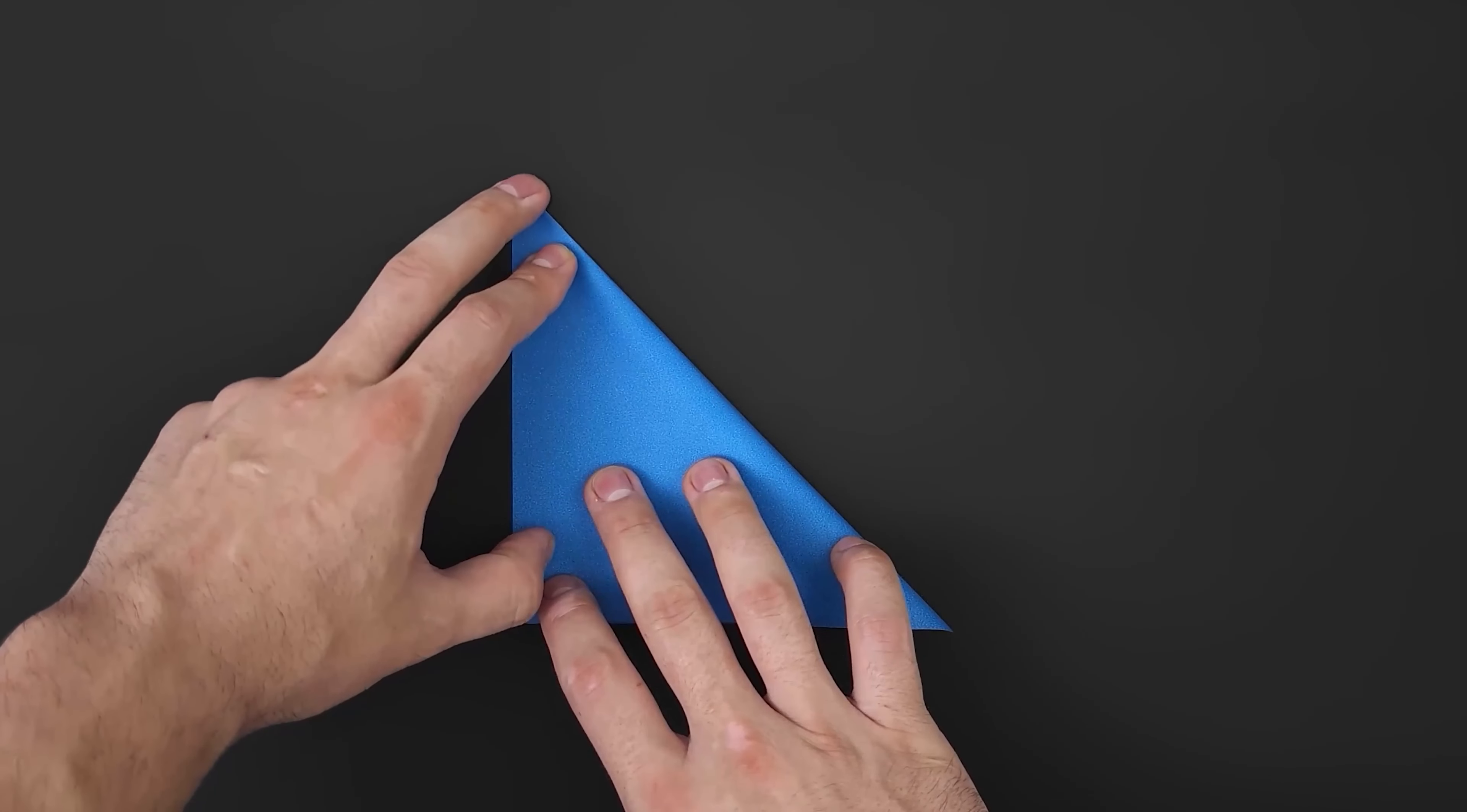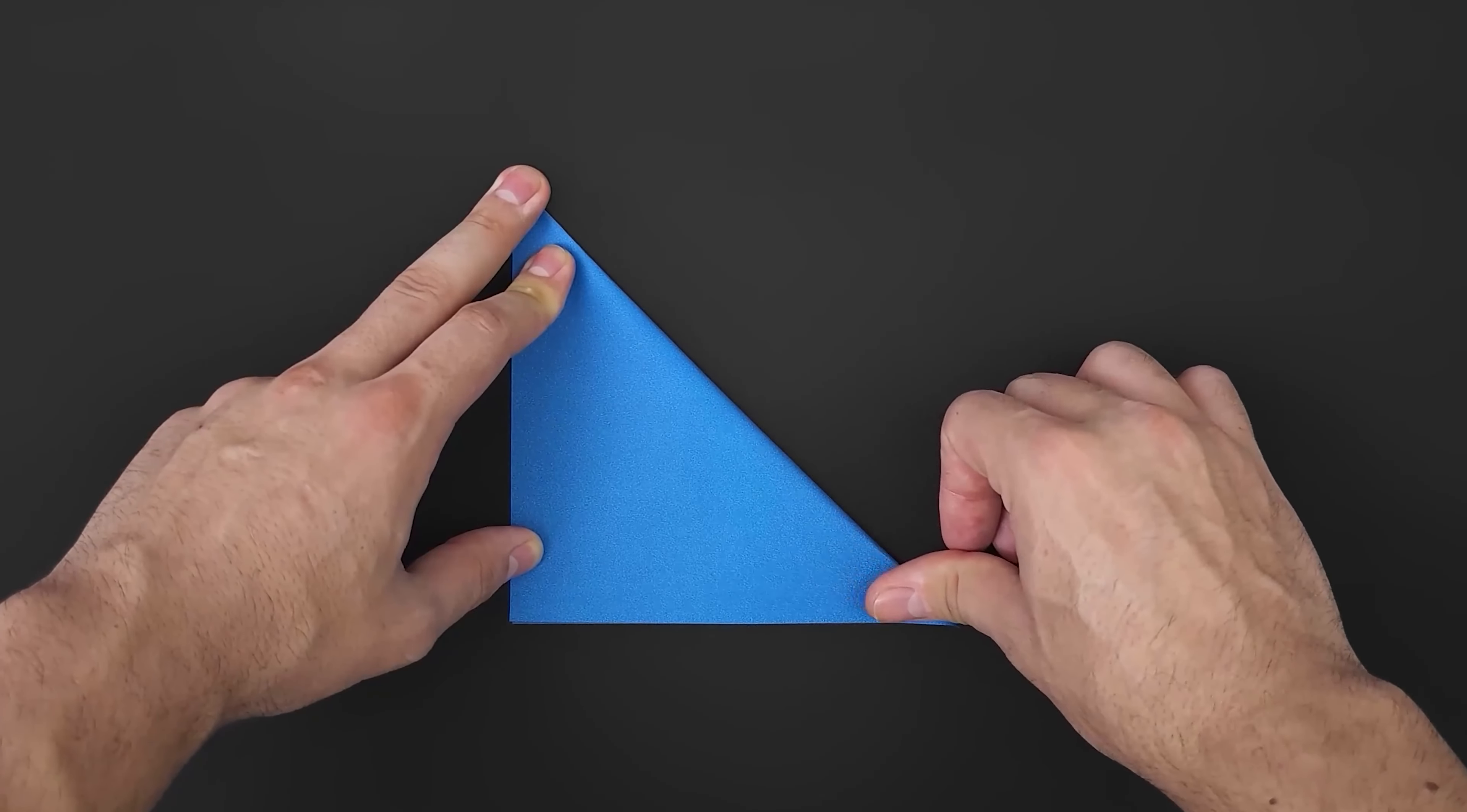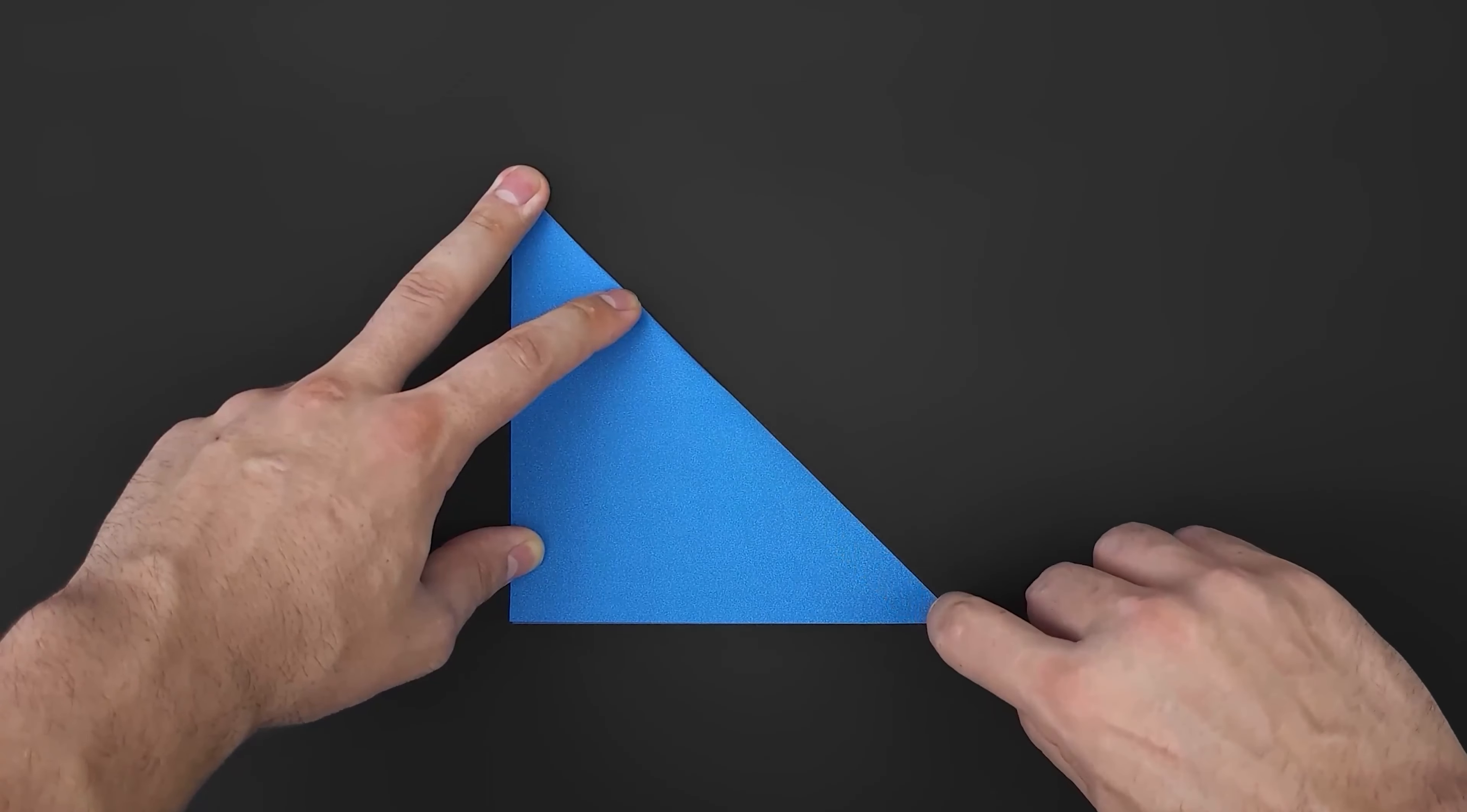To make this model you're going to need a square piece of paper. In this video I'll start with 15x15cm, about 6x6 inches.